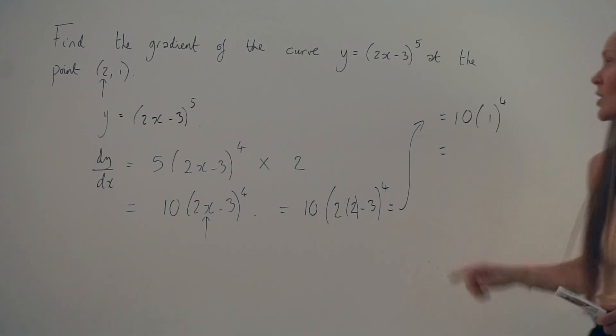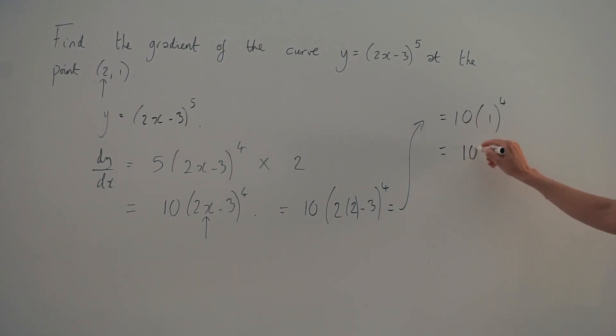Now remember, the number 1 raised to the power of anything is always going to be 1. 1 times 1 times 1 times 1 is still 1. So 10 multiplied by 1 is 10. So that is the gradient at the point (2, 1).